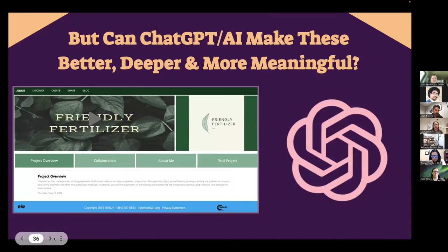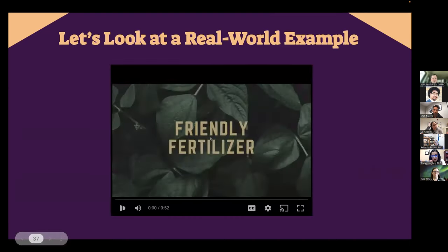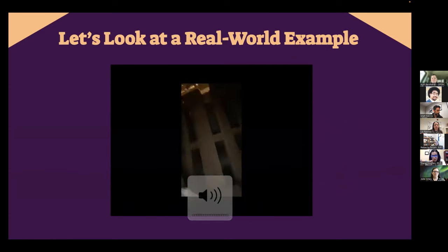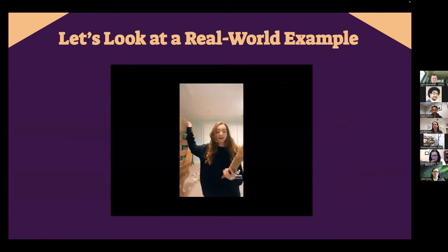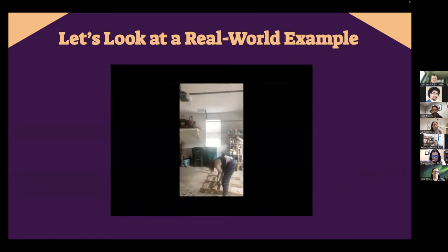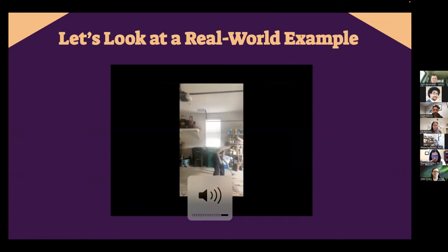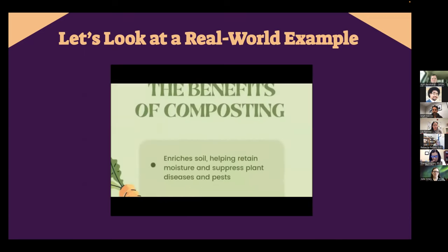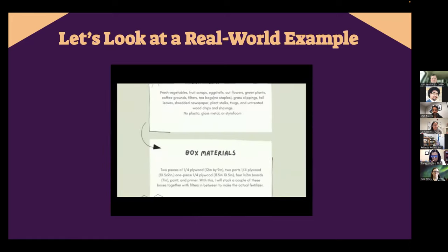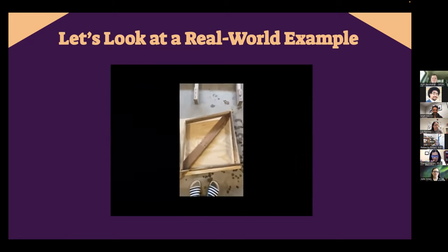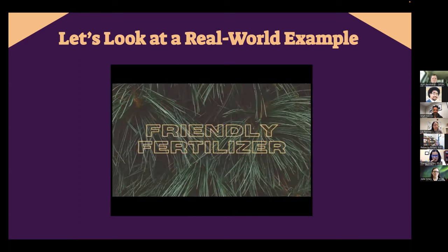This is Friendly Fertilizer — a project done by a junior in high school last year. We're going to look at the different aspects of the project and think about the role that a tool like OpenAI's ChatGPT can augment and enhance the student's work. In her trailer, the student describes gathering used items that would be thrown away — like a donated pallet — and making something new out of them: an eco-friendly compost bin using zero harmful materials, no toxic paint, and absolutely no plastic.